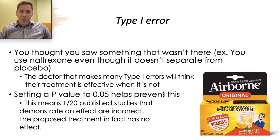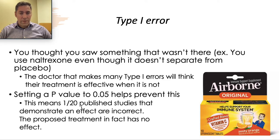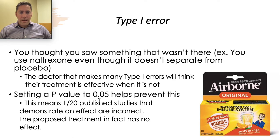Setting a p-value of 0.05 will help prevent type 1 errors. Still, it means that 1 in 20 published studies demonstrate an effect that is incorrect — they will say 'Airborne works.' This gets into publication bias. Let's say I do 20 studies on Airborne — in one of those it's going to appear to work, and then I publish that one and say 'look, Airborne works, vitamin C helps cut down sick days.' This is a problem not just in psychiatry but in medicine as a whole, because there is a publication bias and studies that find things end up getting published. So it's important to remember that just because there is a p-value of 0.05, there is still a statistical chance that there actually is no difference between treatments.